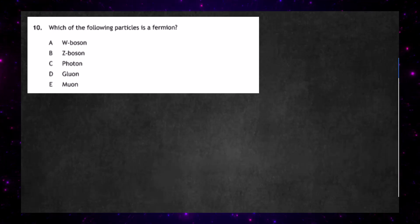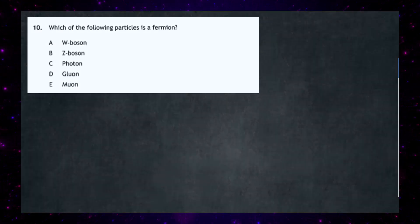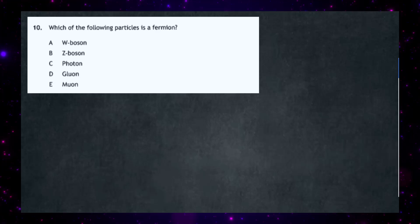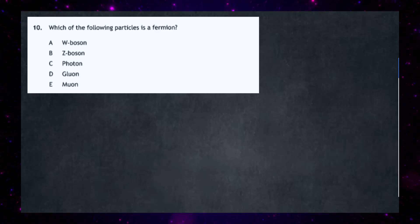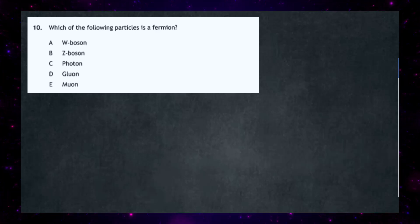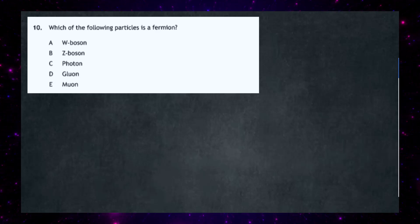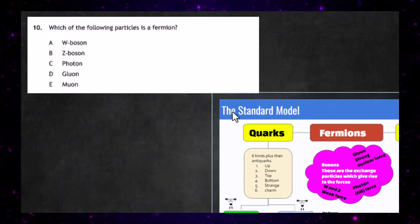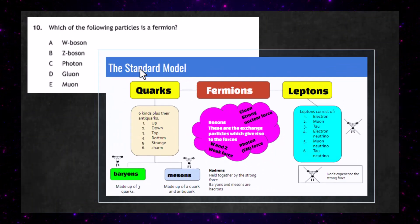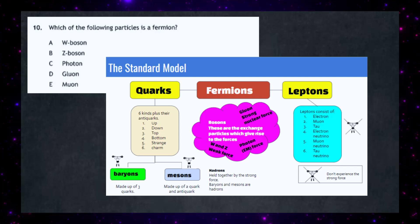Question 10 from the 2024 multiple choice paper in the higher physics exam from the SQA: which of the following particles is a fermion? We're given a choice of a W boson, Z boson, photon, gluon, and muon. You just have to look at the chart and know it off by heart.